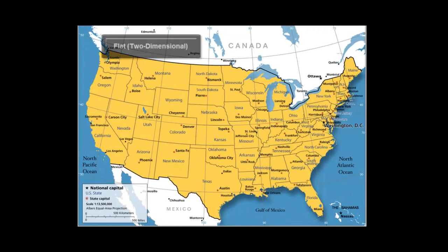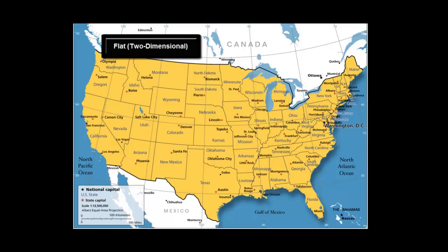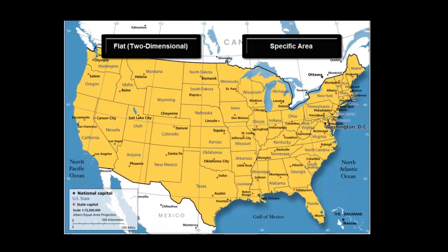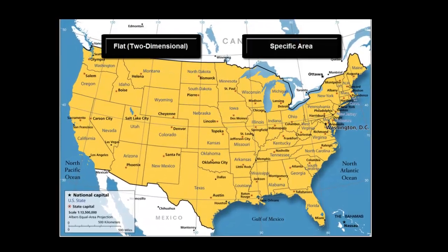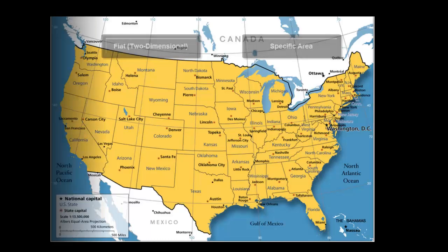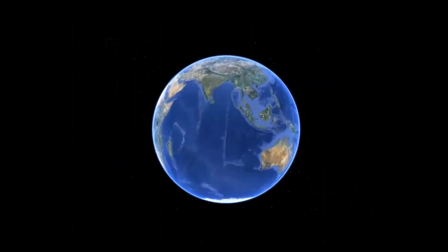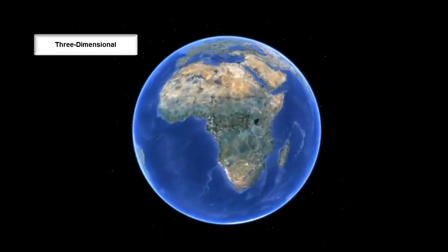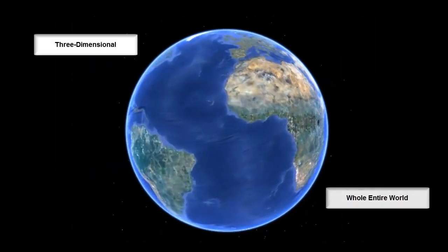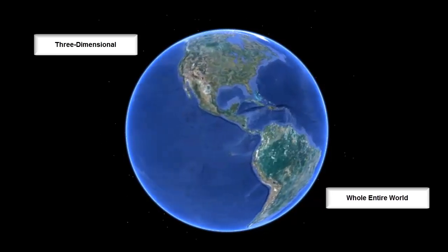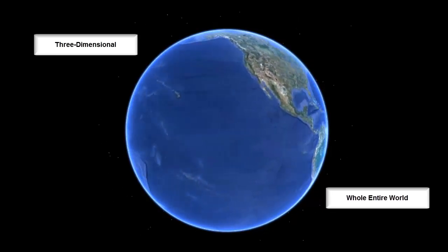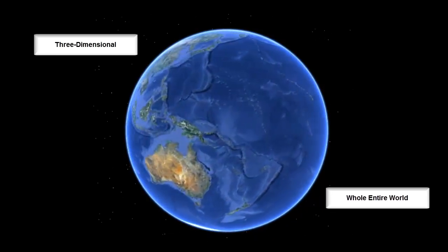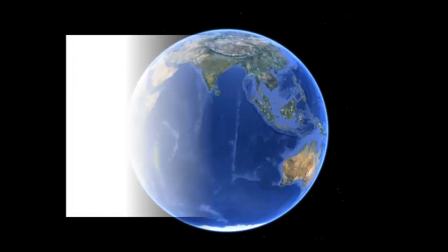A map is a flat or two-dimensional representation of a specific area or region, such as the map shown here of the United States. A globe, however, is a three-dimensional representation of the whole entire world, not just a small area like the map we just saw. The spinning globe shown here is a three-dimensional version of the entire world.